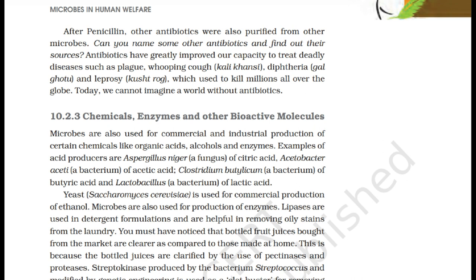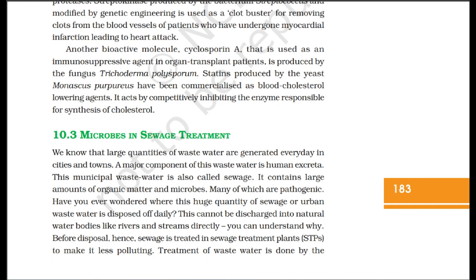Microbes are also used for production of enzymes. Lipases are used in detergent formulations and are helpful in removing oily stains from the laundry. Bottled fruit juices from the market are clearer compared to those made at home because they are clarified by the use of pectinases and proteases. Streptokinase, produced by the bacterium Streptococcus and modified by genetic engineering, is used as a clot buster for removing clots from blood vessels of patients who have undergone myocardial infarction. Cyclosporine, used as an immunosuppressive agent in organ transplant patients, is produced by the fungus Trichoderma polysporum. Statins produced by the yeast Monascus purpureus are commercialized as blood cholesterol-lowering agents; they act by competitively inhibiting the enzyme responsible for synthesis of cholesterol.